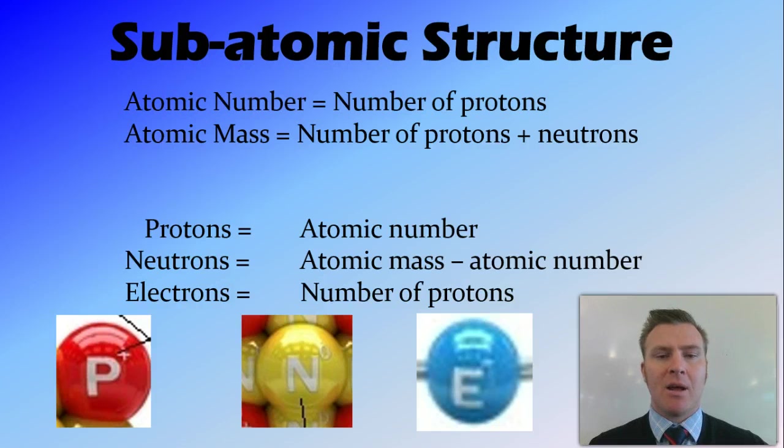So therefore, we can tell the number of protons equals the atomic number. Neutrons is the atomic mass, so the number of protons and neutrons, minus the atomic number, which is the number of protons, giving us the number of neutrons. And the number of electrons is equal to the number of protons. And this is because the atom needs to be overall neutral. So if we have a number of positively charged protons, we need a number of negatively charged electrons to counteract that, to make it neutral overall.